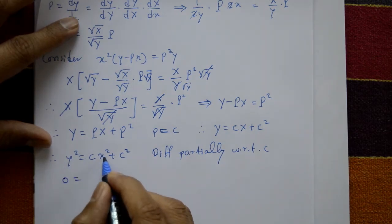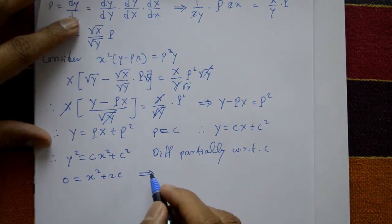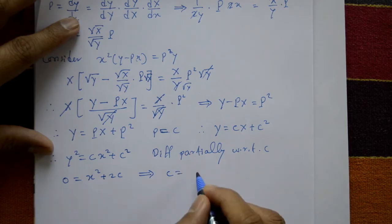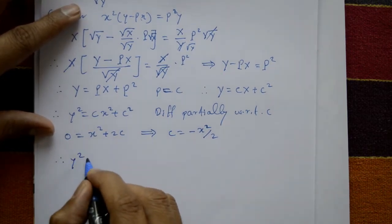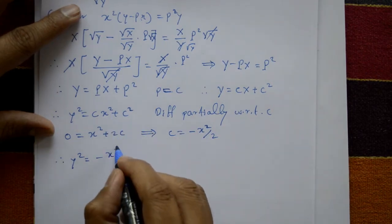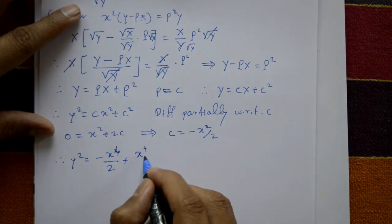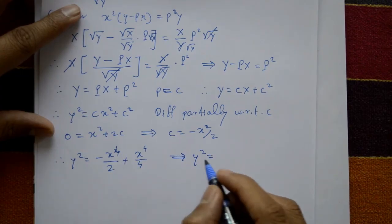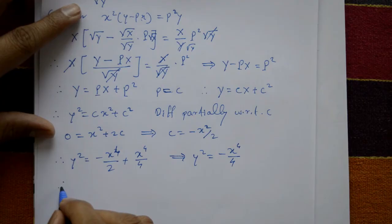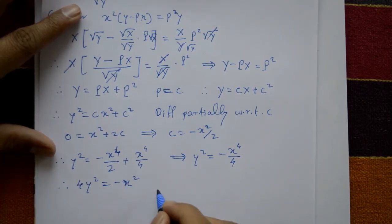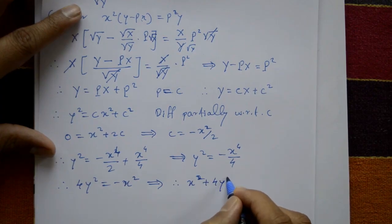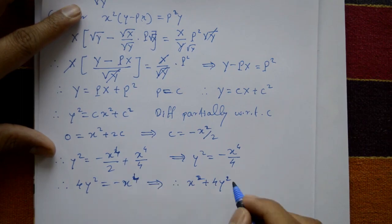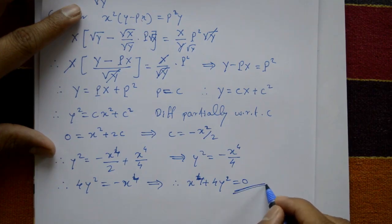To find the singular solution, differentiate partially with respect to c, treating x and y as constants: 0 equals x squared plus 2c, giving c equals minus x squared by 2. Substituting this c value into the general solution: y squared equals minus x squared over 2 times x squared plus x to the 4 over 4. Taking LCM gives y squared equals minus x to the 4 over 4. Cross-multiplying: 4y squared equals minus x to the 4, therefore x to the 4 plus 4y squared equals 0. This is the required singular solution of the Clairaut equation.